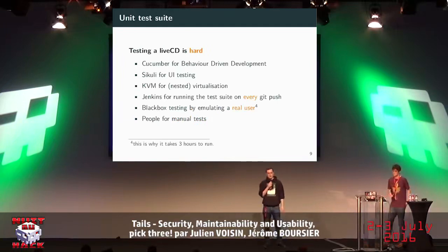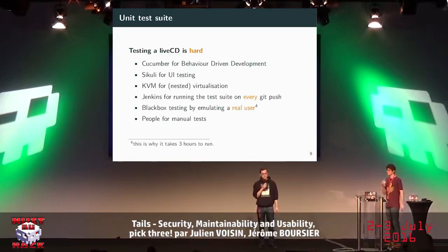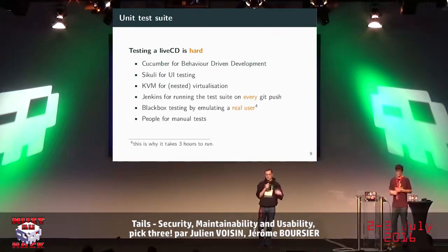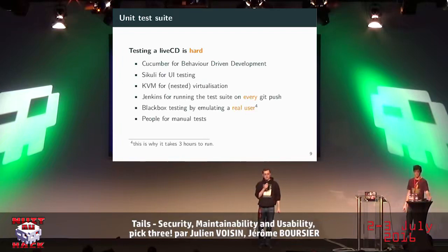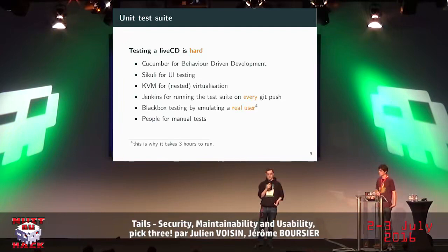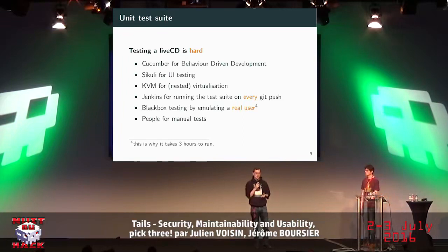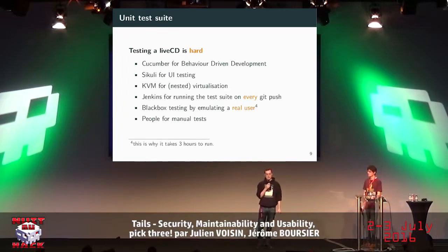Tails has a test suite, but since it's a live CD it's really complex. We use Cucumber for behavior-driven development, Sikuli for UI testing, and KVM for nested virtualization — running VMs inside VMs inside VMs. We use Jenkins on every push on every branch. Part of the test suite tests Tails like a black box: emulating a real user with mouse clicks, taking screenshots, and diffing the screenshots. It takes three hours to run on a heavy machine.